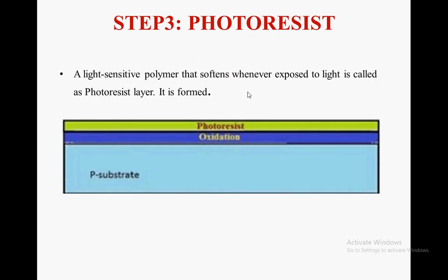Step 3 is the photo resist process. A light-sensitive polymer that softens whenever exposed to light is called a photo resist layer. It is formed as shown — the photo resist softens whenever it is exposed to light.